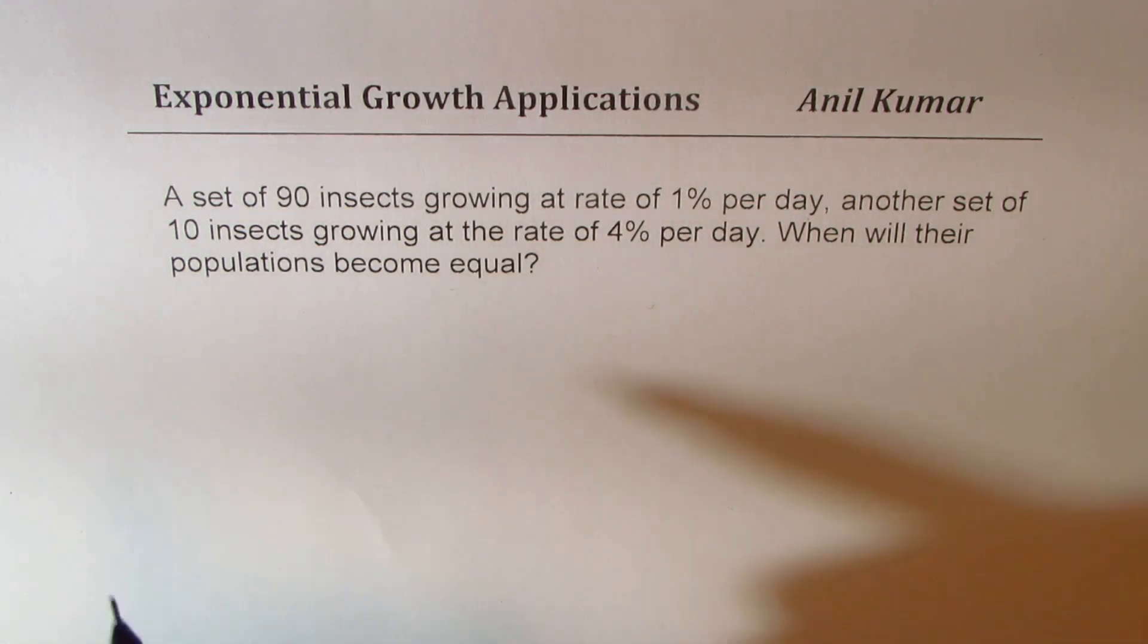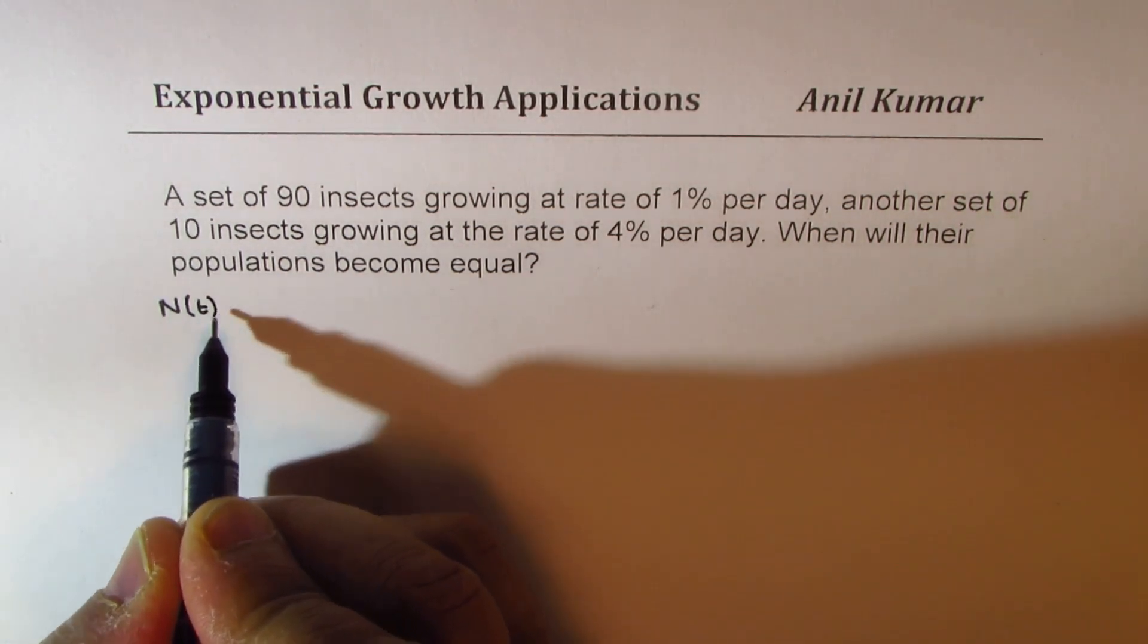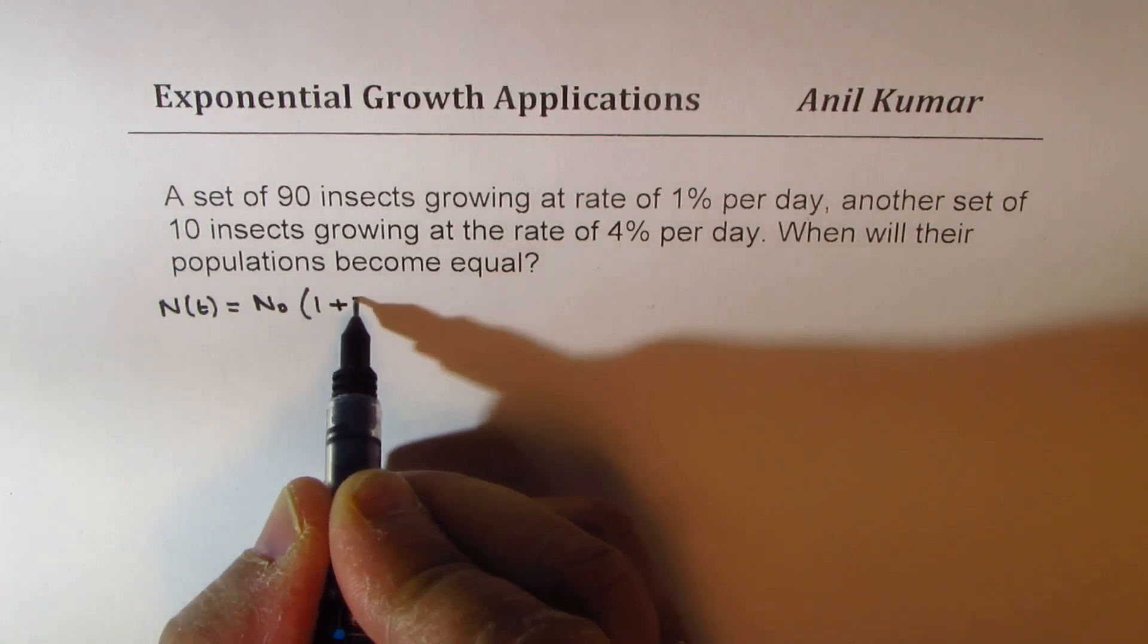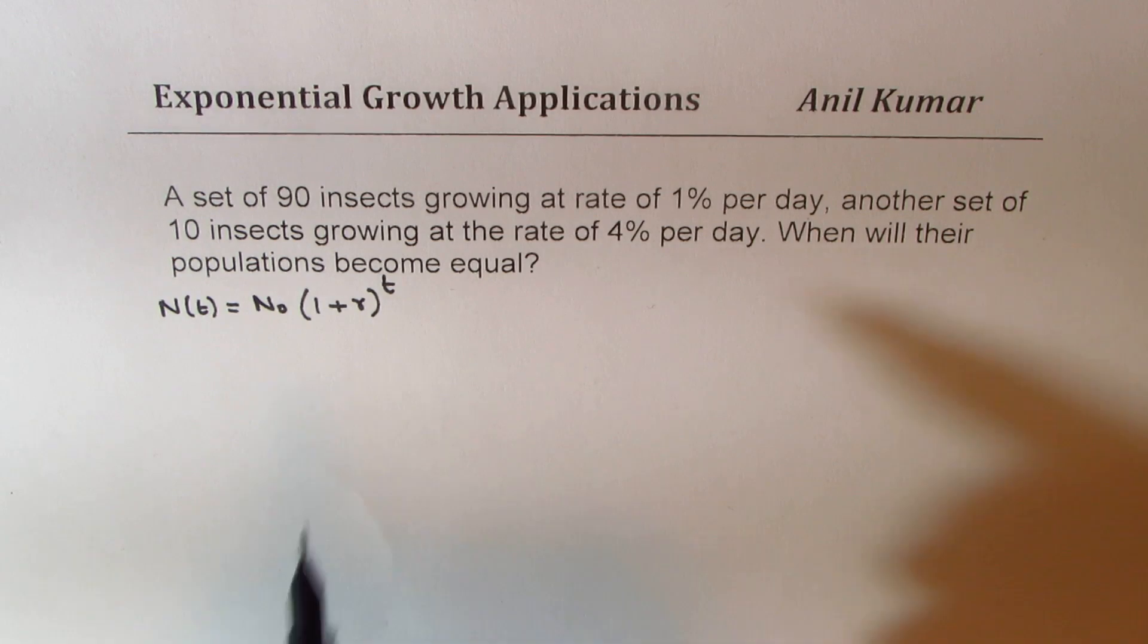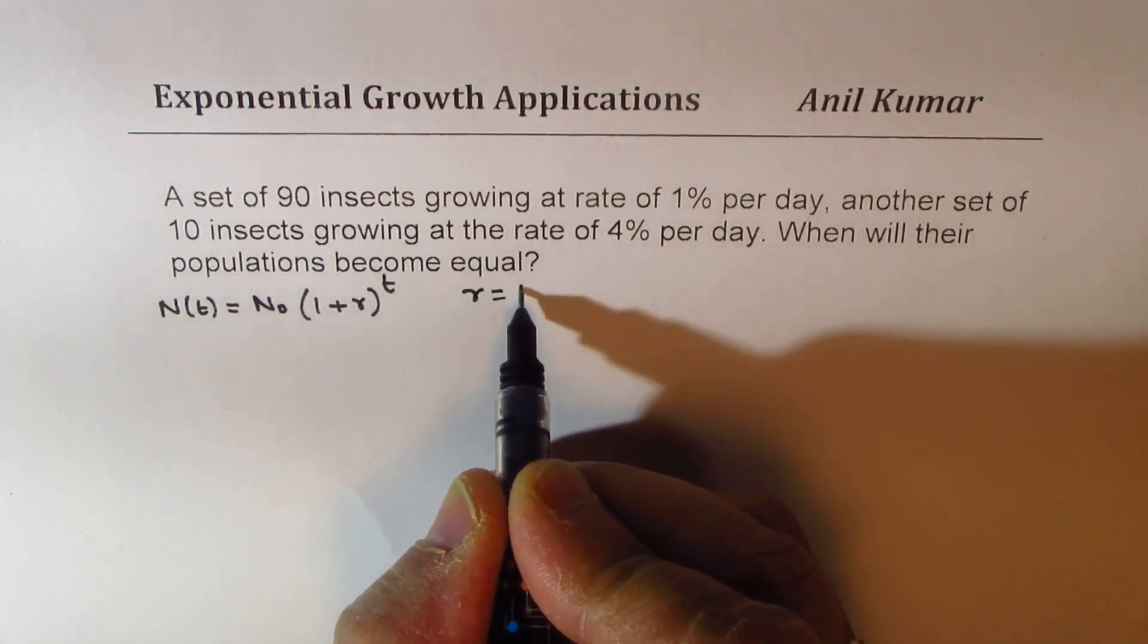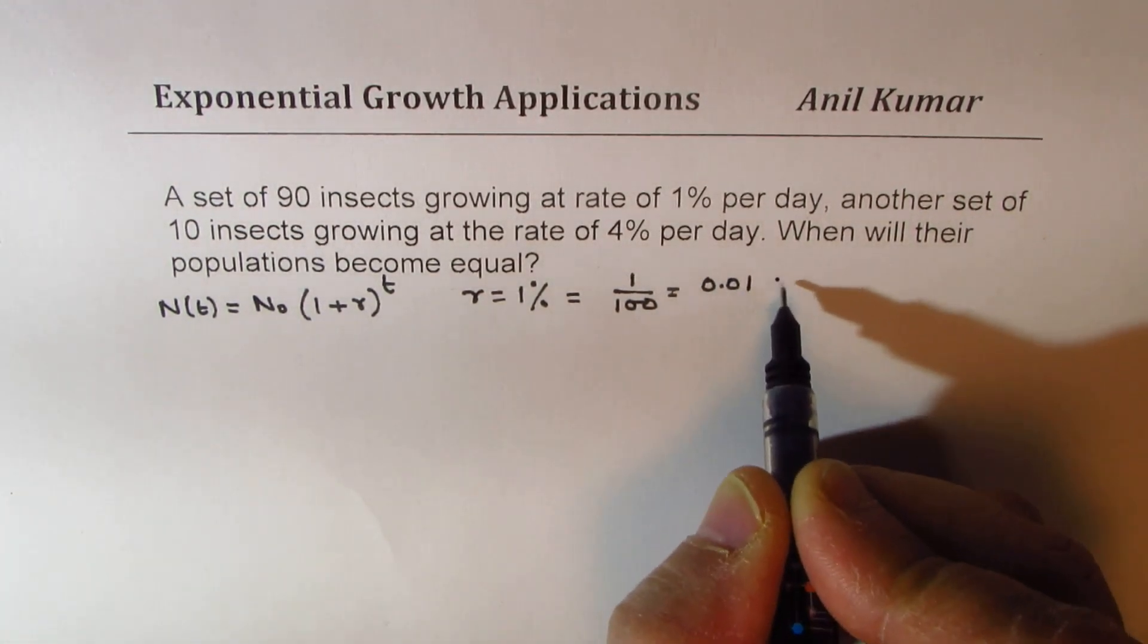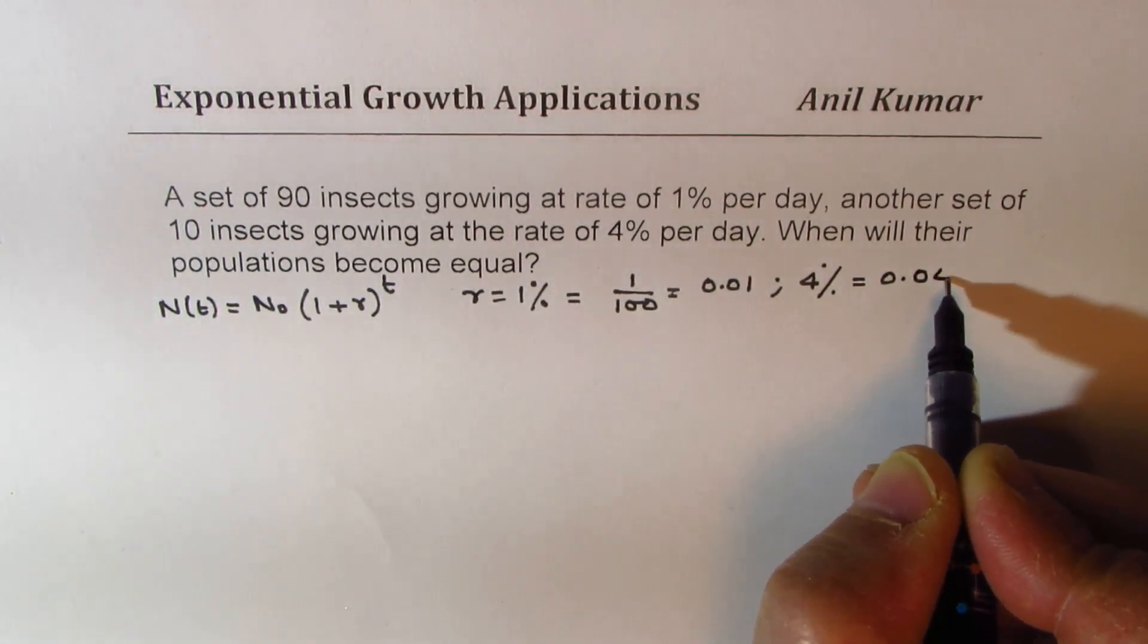So let me first give you the formula which should be used for growth. The number of insects at any time t is basically equal to initial amount, let me write this as N0, times 1 plus growth rate to the power of t. Now in this particular case, we are given growth rate of 1% and 4%. So when the rate is given in percent, we have to write this as 1 over 100, a decimal equivalent of 0.01. Similarly, 4% will be equal to 0.04.